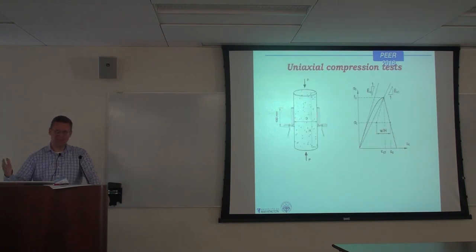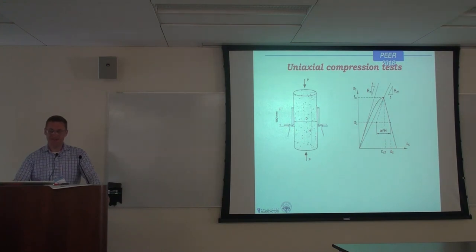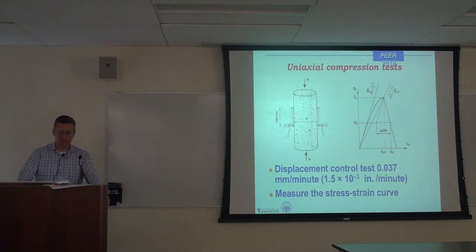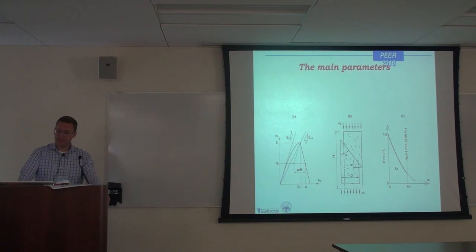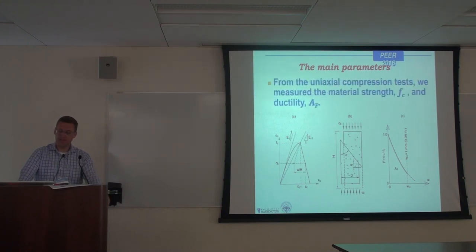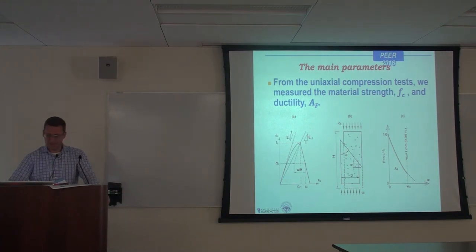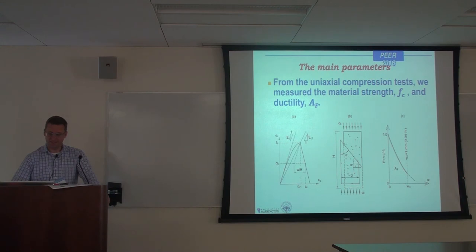Compression tests: you measure force, divide by area, and get the stress-strain behavior in compression. This is a quasi-static displacement-control test at a very slow rate of 1.5 milli-inches per minute, then measure the stress-strain curve. From those tests, you can determine basic things like material strength, f'c, and ductility, A sub f. The definition of ductility here probably varies a little from what structural engineers typically think of, but it is a concrete property measurable through compression tests.